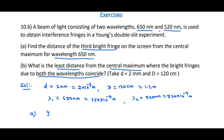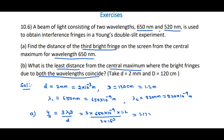For sub-question (a): y₃ = 3λ₁D/d = 3 × 650 × 10⁻⁹ × 1.2 / (2 × 10⁻³) = 1.17 × 10⁻³ m, which is 1.17 mm.